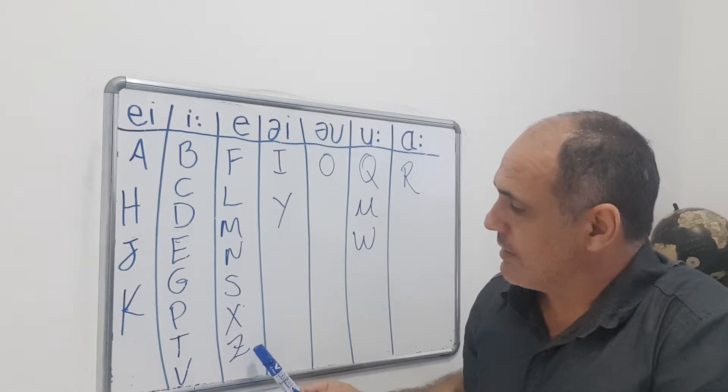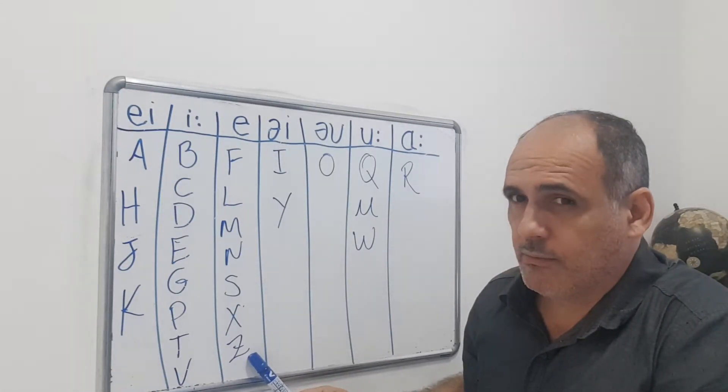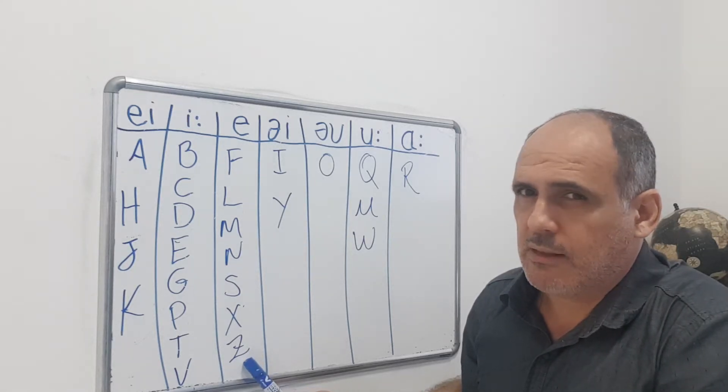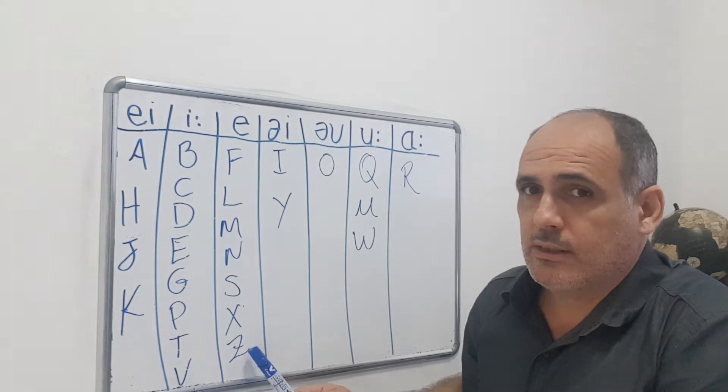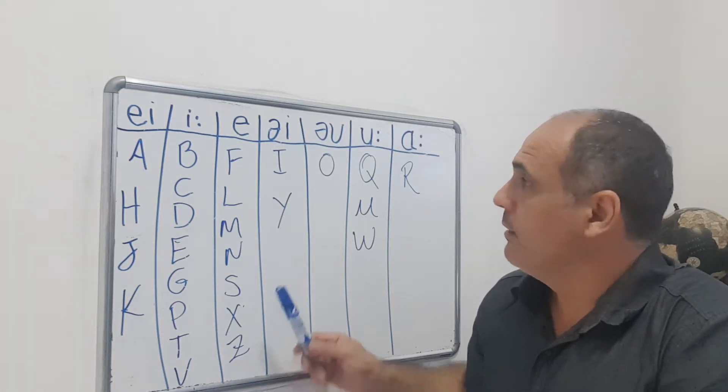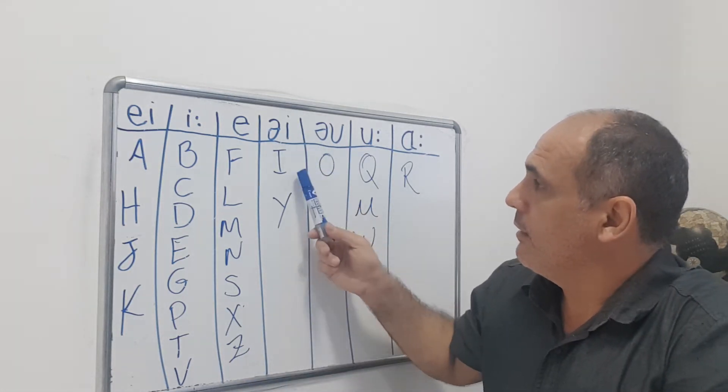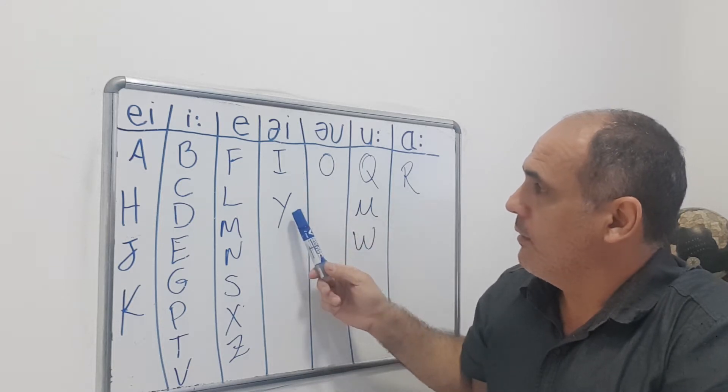Observando que o Z é britânico. In America they say Z. Nos Estados Unidos eles falam Z. So Z or Z. I, Y.